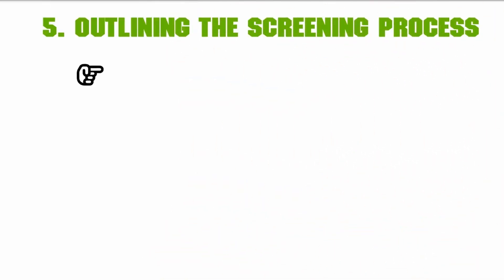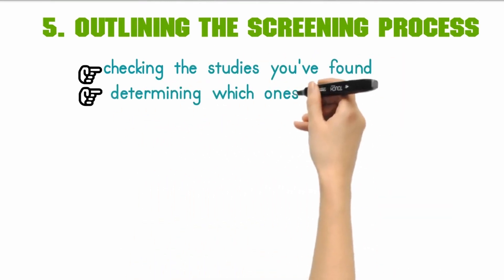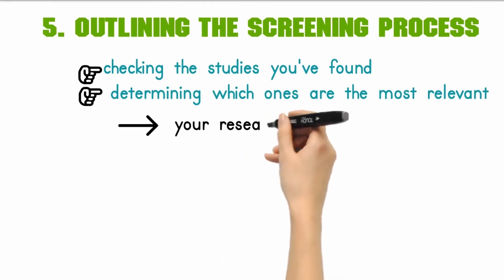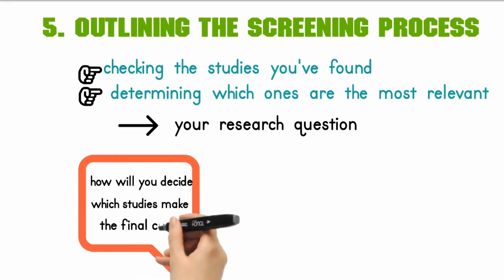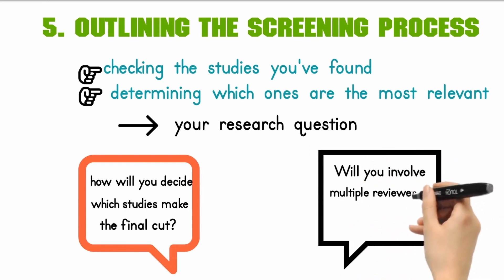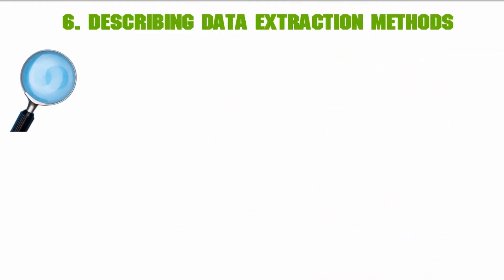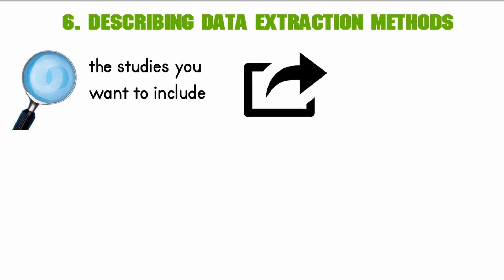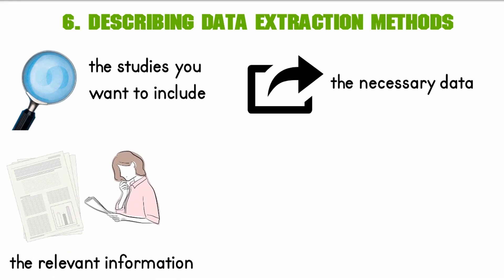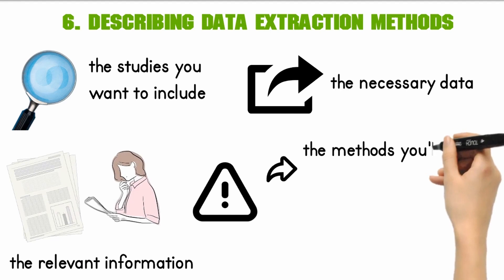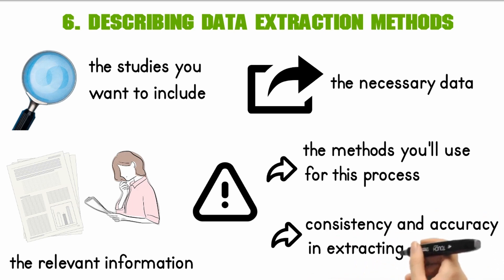Step 5: outlining the screening process. This step involves checking the studies you've found and determining which ones are most relevant to your research question. You'll need a clear plan — how will you decide which studies make the final cut? Will you involve multiple reviewers to ensure objectivity? Make sure you outline this screening process in your protocol. Step 6: describing data extraction methods. Once you've identified the studies to include, it's time to extract the necessary data — going through each study and collecting relevant information. Describe the methods you'll use and how you'll ensure consistency and accuracy.